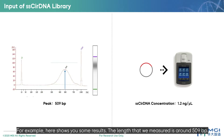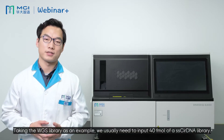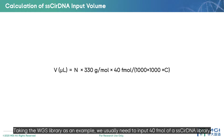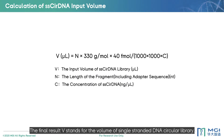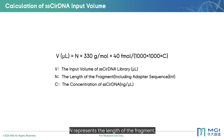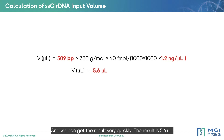For example, here are some results. The fragment length measured is around 509 bp, and the concentration of our single-stranded circular DNA library is 1.2 nanograms per microliter. Taking a WGS library as an example, we usually need to input 40 fmol of the single-stranded circular DNA library, and bring the numbers from library QC into the calculation formula. The variable V stands for the volume of the single-stranded circular DNA library, N represents the fragment length in nucleotides including the adapter sequence, and C stands for the concentration of the final library. The result is 5.6 microliters.